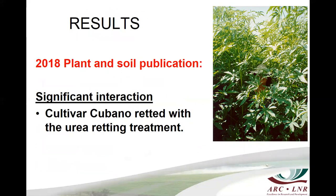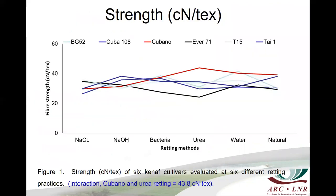For the results — published in the 2018 Plant and Soil journal — we found a significant interaction: the cultivar Cubano retted with the urea retting treatment gave the strongest fibers. On the x-axis are the retting methods and on the y-axis the fiber strength in centinewtons per tex. The interaction of Cubano and urea retting gave a strength of 43.8 centinewtons per tex, which is much stronger than the 33 centinewtons per tex required for acceptable biocomposite quality.